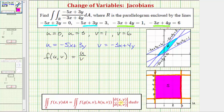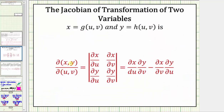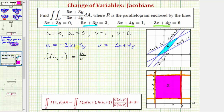We still have to find the Jacobian, which is the extra factor in the integrand function when writing the integral in terms of u and v. The Jacobian is equal to a two-by-two determinant, which equals this product minus this product. To find these partial derivatives, we need equations for x in terms of u and v, as well as y in terms of u and v. We'll find these using u equals negative five x plus three y and v equals negative three x plus four y. Note that we take the absolute value of the determinant.